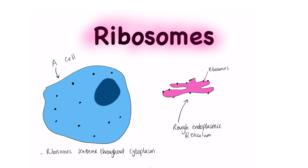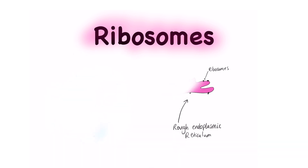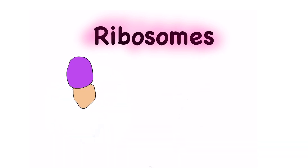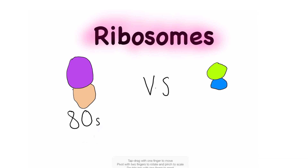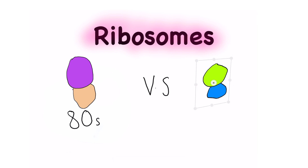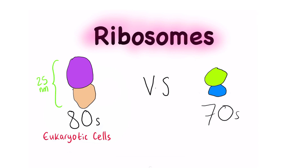There are two types of ribosomes which we see generally. We have the 80S ribosomes, which are found in eukaryotic cells. They are around 25 nanometers in diameter.